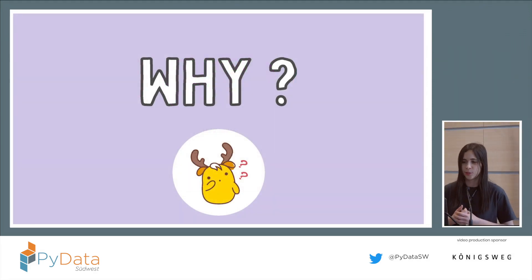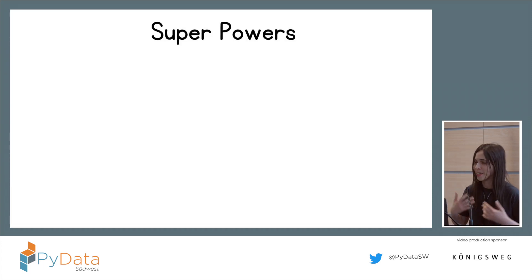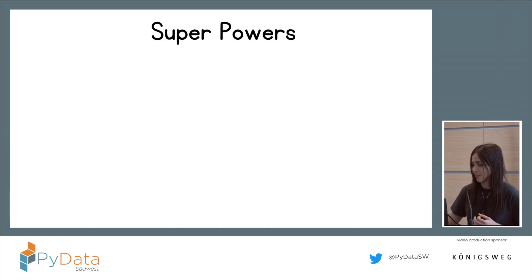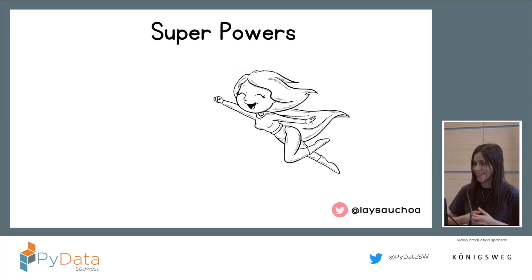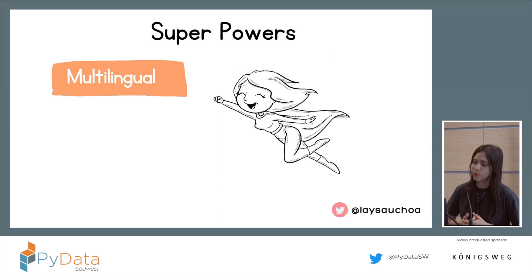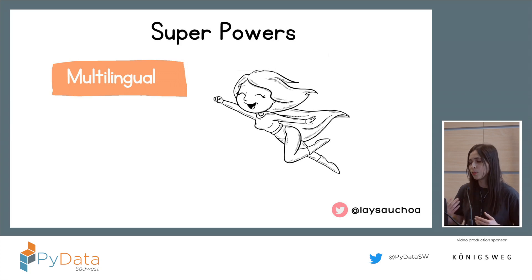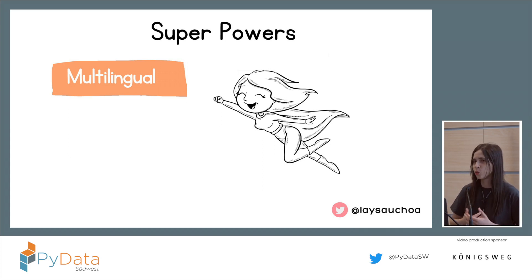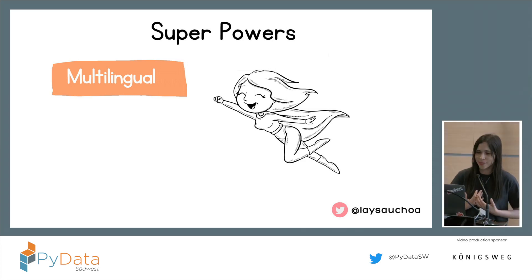So why should you consider using OpenSearch? When I think about OpenSearch, I try to summarize its superpowers like a superhero. One of the powers is that it's multilingual — it has support for more than 30 languages. When you send your JSON data to OpenSearch, you can specify the language and do more configurations to support those languages.